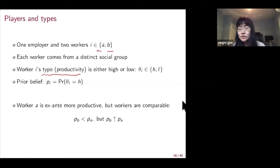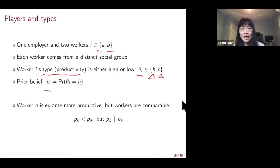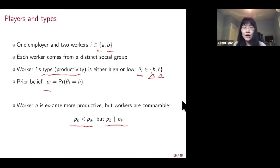The employer does not know the worker's type at time zero. The employer's belief is PI that worker i is a high type. We assume that worker A is ex-ante more productive, so PB is smaller than PA, but we are going to take PB to be super close to PA and examine what happens when PB is super close to PA. For this case, we say that workers are comparable — they have very similar expected productivity.